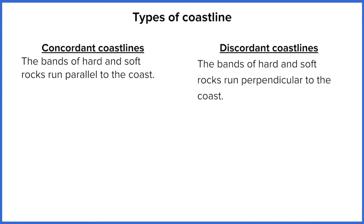A concordant coastline is where we have bands of hard and soft rock that run parallel to the coast, and the discordant coastline is the opposite — we have rocks that run perpendicular to the coast. We're going to have a look at these in more detail with some diagrams to explain what that means.